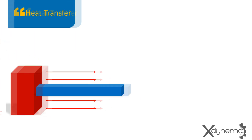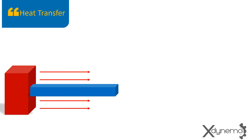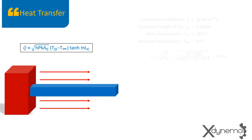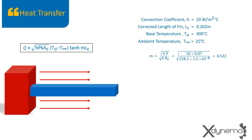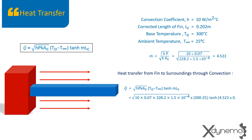Heat transfer: the rate of heat transfer from the FIN surface is given by Q equals square root of (h·P·k·A_c) × (T_naught minus T_infinity) × tanh(M·L_c). Make sure that the corrected length is being used in this formula. On substituting the above values, the heat transfer rate from FIN surface to surroundings is obtained as 30.767 watts.